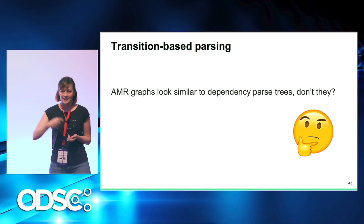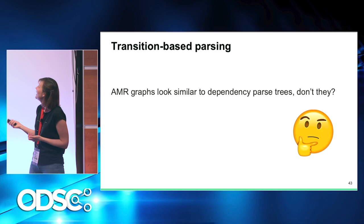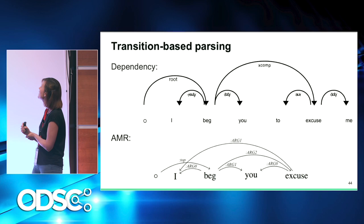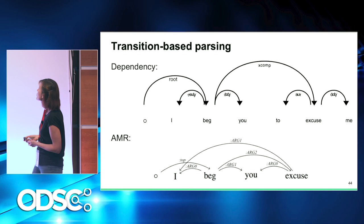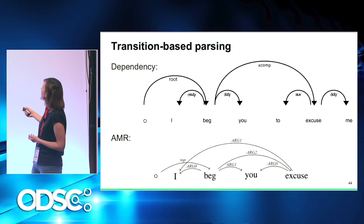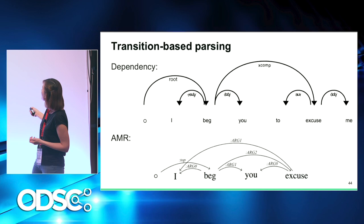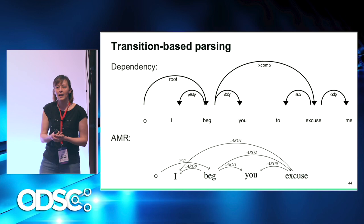The transition-based algorithm is based on the observation that AMR graphs look suspiciously similar to dependency parse trees. Aligning the two representations for 'I beg you to excuse me' — the dependency parse tree on top and AMR on the bottom — we can see many similarities: the same relation from 'beg' to 'I' (nominal subject in syntax, argument zero in AMR); from 'beg' to 'you' (object vs. argument one). The idea is that we can apply a couple of transformations to the syntactic parse tree and get an AMR.